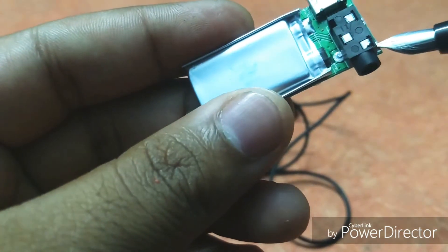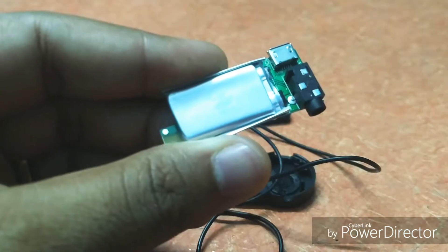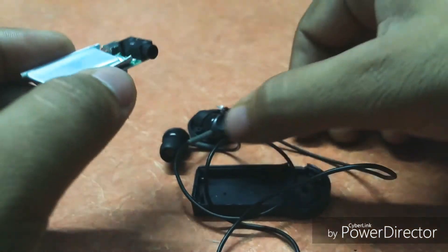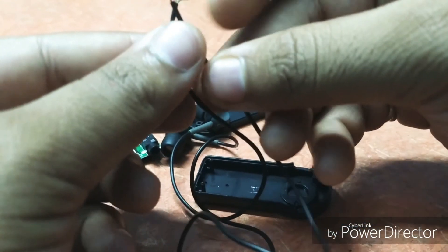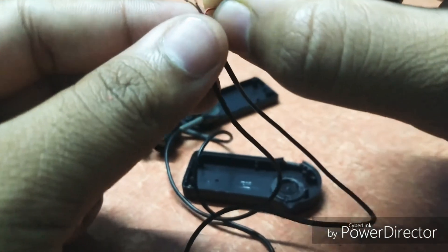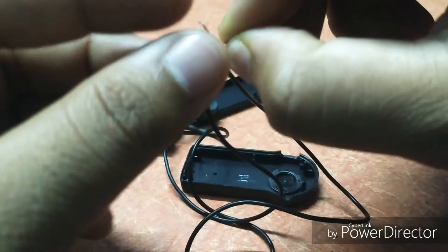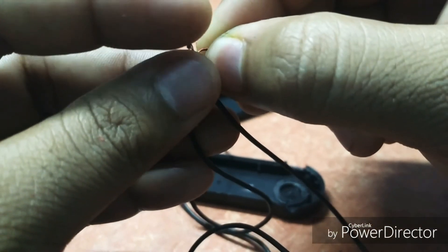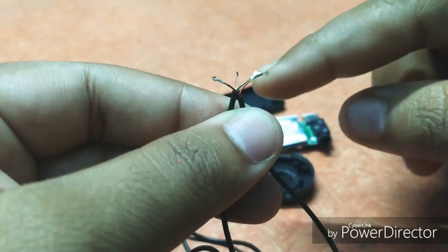Now what you have to do is, you've already removed the insulation of your drivers. You have to connect the two wires together of each driver, and that will become your common point. The rest of the two will be your right channel and left channel.